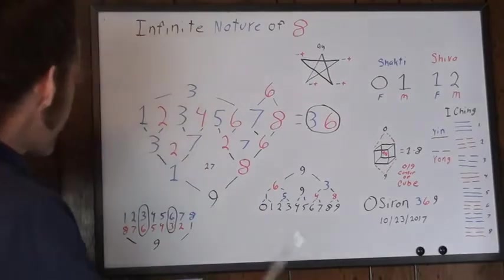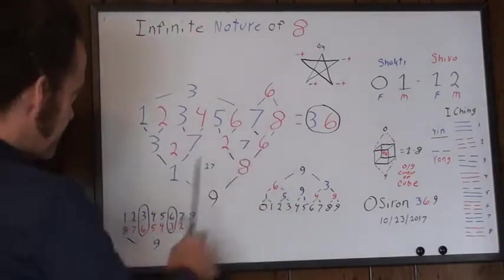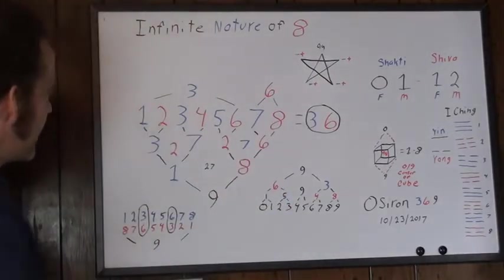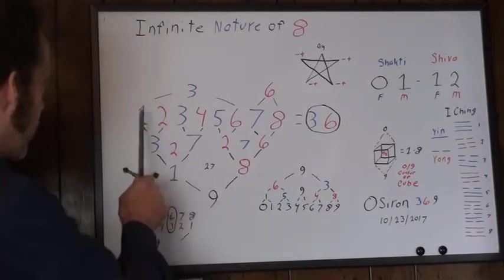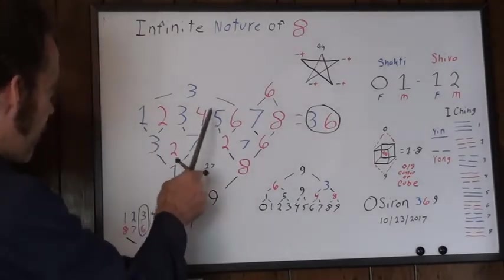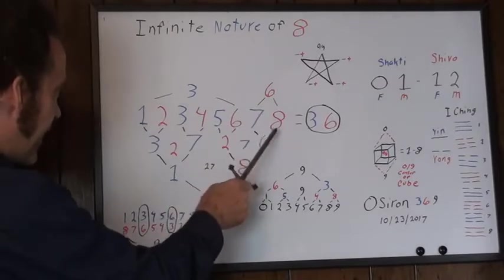But we see here the numbers written out 1 through 8. And you see how if you break the numbers into groups, you got 1 and 2, 3 and 4, 5 and 6, and then 7 and 8.